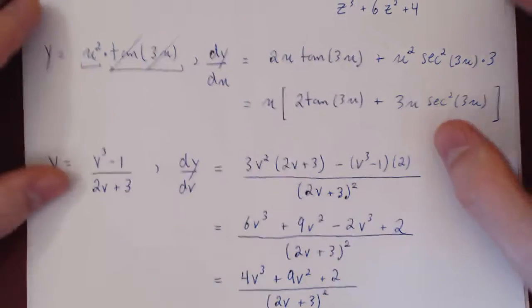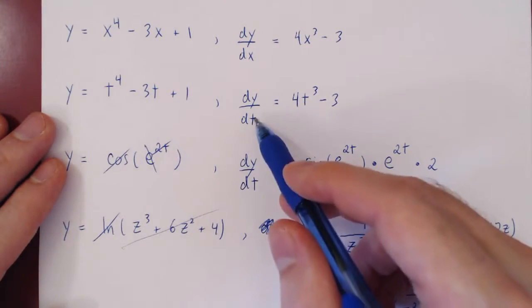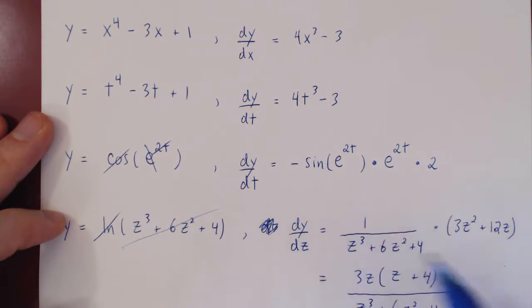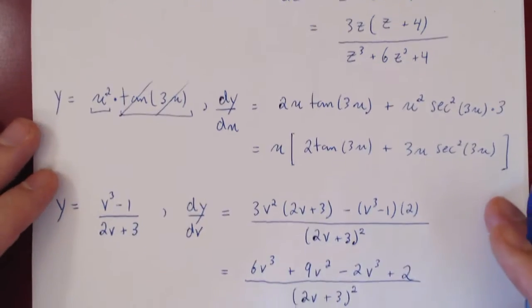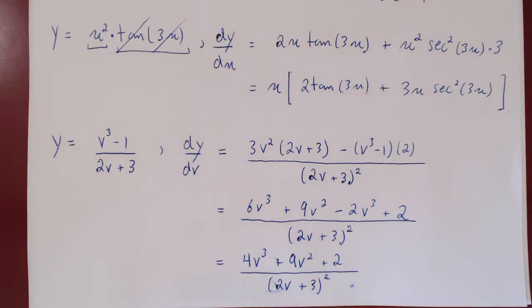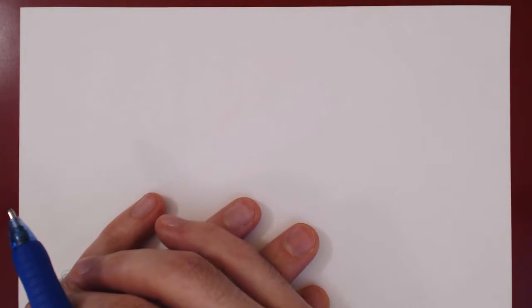Whether you have a function of x — differentiate with respect to x; function of t — differentiate with respect to t; function of z, u, v, or any other variable — when you differentiate, you differentiate with respect to that given variable. I'm reviewing this because our next topic will be related rates, and we'll very often have functions of t because variables will be changing as a function of time.